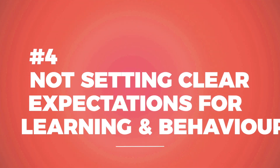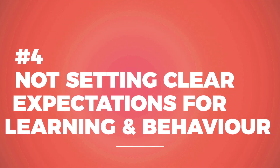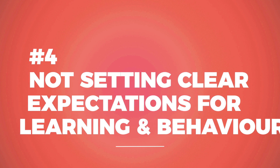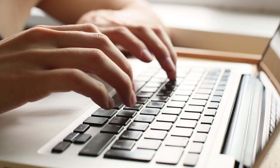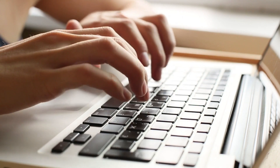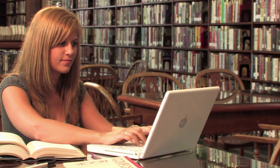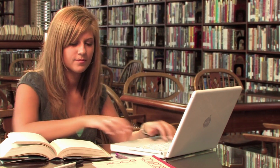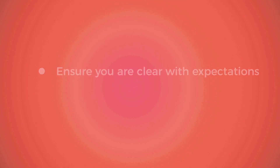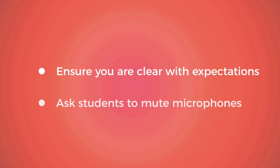Number four: not setting clear learning intentions and expectations of behavior. Like with all teaching and learning, clearly communicating your learning intentions and setting your expectations for behavior right from the get-go is essential for a successful session, and this becomes even more important when teaching online. Make links to any previous learning clear and ensure everyone knows what they're expected to learn and to contribute. Be clear about talking over each other, the use of GIFs and emojis, and ask students to mute their mics when they're not talking, as this helps to manage the session.